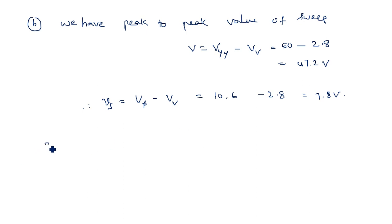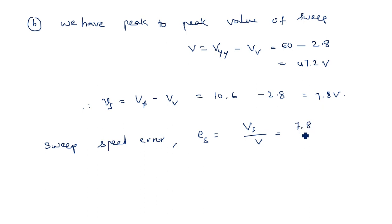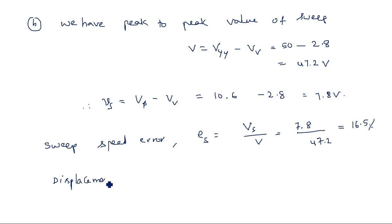The sweep speed error Es is equal to Vs divided by the peak-to-peak value, that is 7.8 divided by 47.2, which equals approximately 16.5 percent. That is the slope error or sweep speed error. The displacement error Ed is equal to Es divided by Ed, which is equal to 0.02.